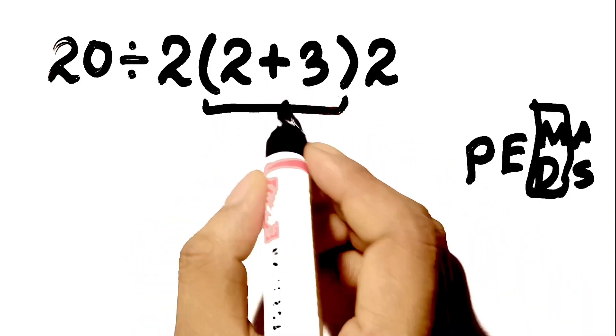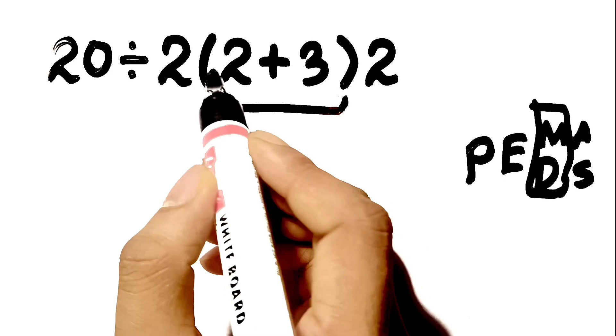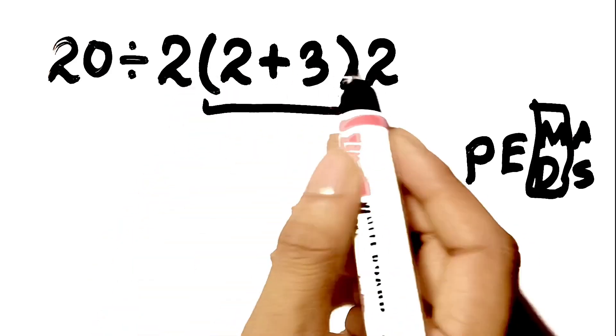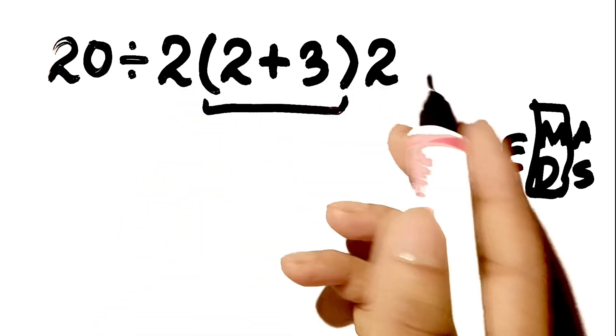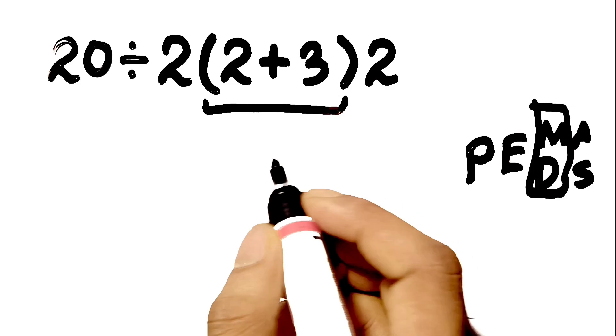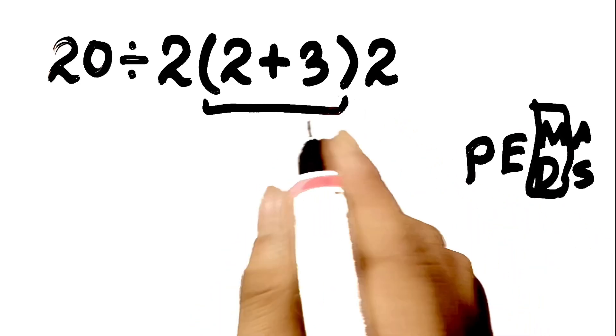Here we have multiplication, because in mathematics, when a number is placed next to a parenthesis, it means multiplication. And we usually don't write the multiplication sign for brevity.